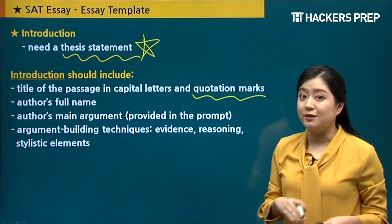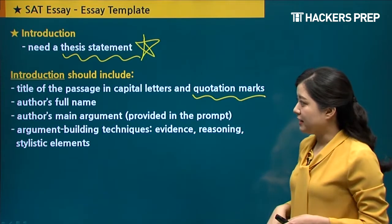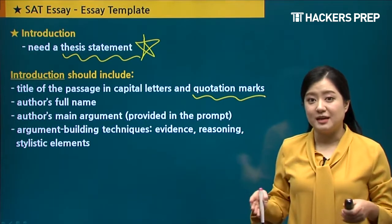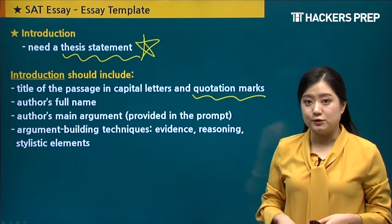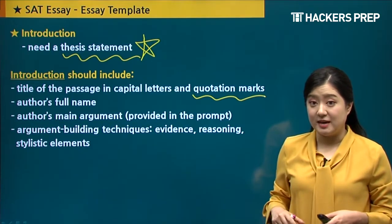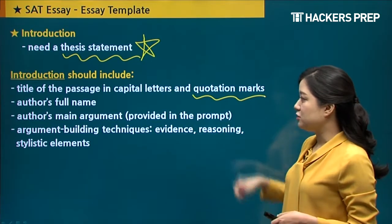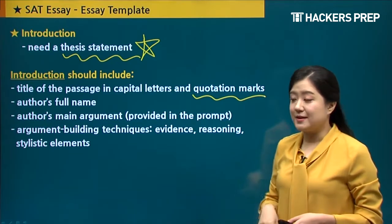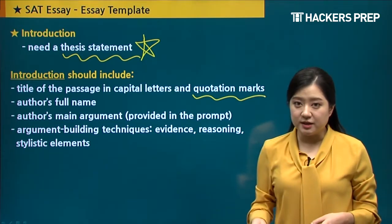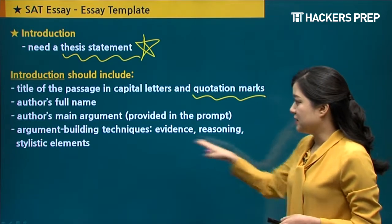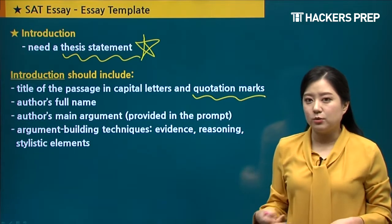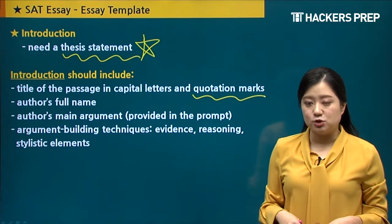A lot of people tend to underline the passage name, but you should use quotation marks. Second, you need to have the author's full name — a lot of students use only the first or last name, but you need the full name once and then afterwards you can use just the last name. Next you need the author's main argument, which is given in the prompt at the end — you can copy it or paraphrase it. Finally, state the argument building techniques the author uses: ideally all three — evidence, reasoning, and stylistic elements — though not all passages have all three.